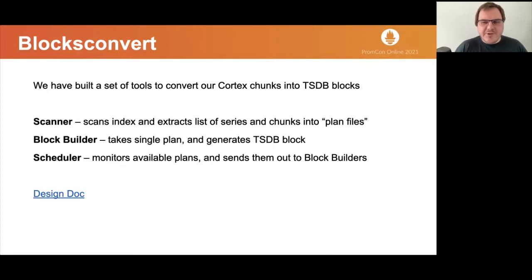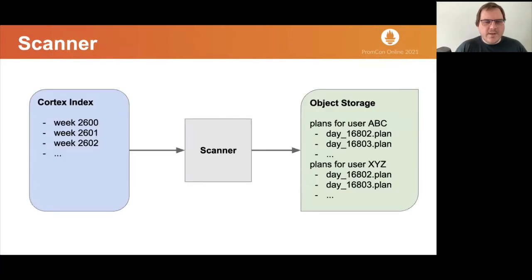Scanner scans the index tables. In Cortex, our index is divided into individual tables. Each table covers one week of data. When Scanner scans the table, it is processing all index entries in some order. Due to how Cortex stores index entries, this order is basically random because Cortex prefixes each entry with the hash for better key distribution. At least that is the case when Cortex stores index in Bigtable, which is what we have used in our production. While reading all index entries, Scanner only selects entries that describe the mapping between series IDs and chunks and stores these mappings into a file. We know minimum and maximum time of chunk because it's part of the chunk ID. So we know into which days the chunk belongs.